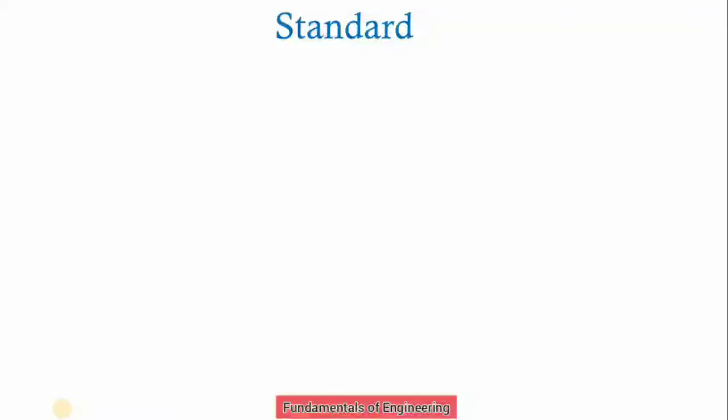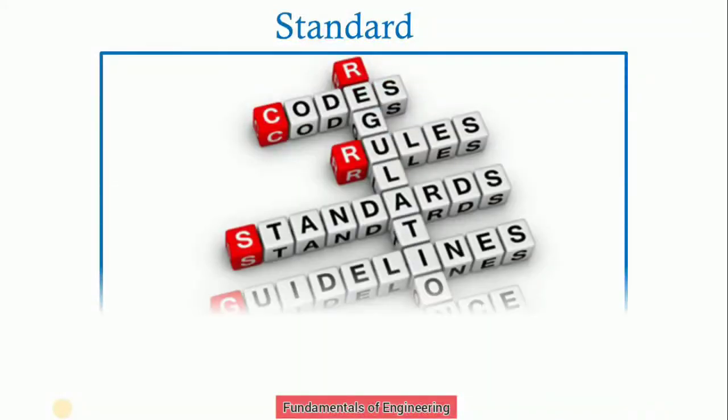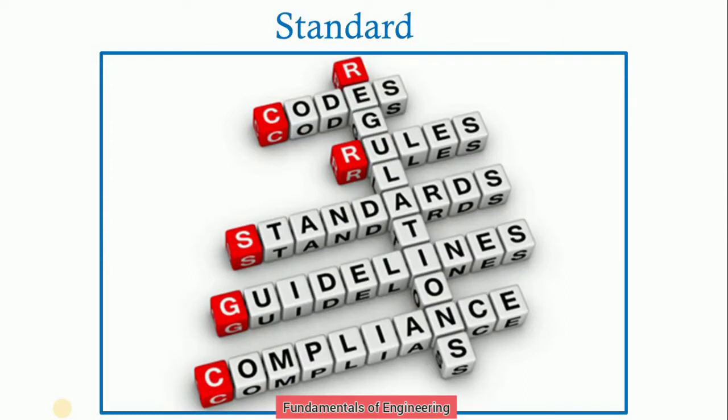Before starting with line standard and end standard, first we will discuss about standard. A standard is defined as something that is set up and established by an authority as a rule for the measure of quantity, weight, extent, value or quality. For example, meter is a standard established by an international organization for measurement of length. So standard is codes, regulations, rules, guidelines and compliance which is set by authority and accepted worldwide.